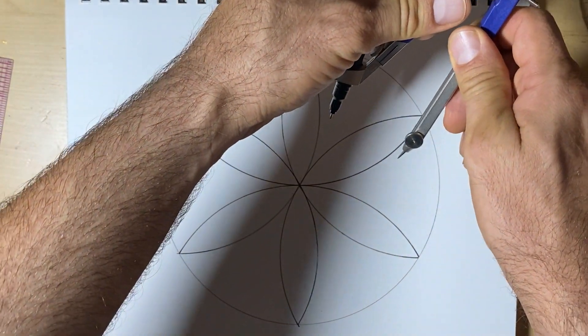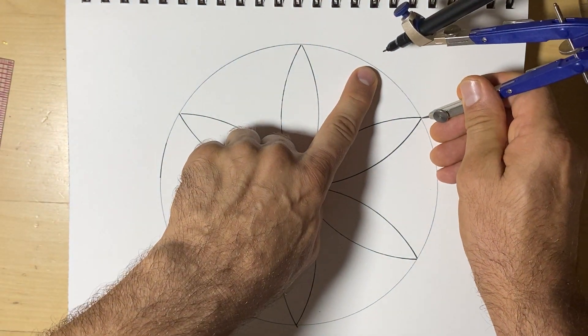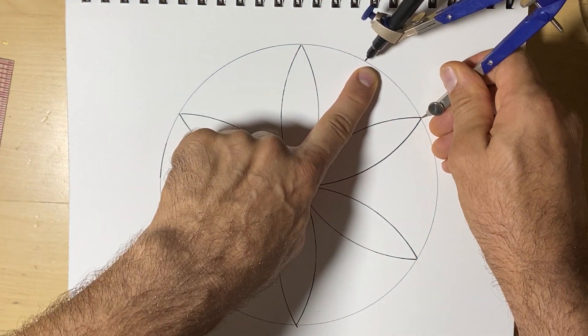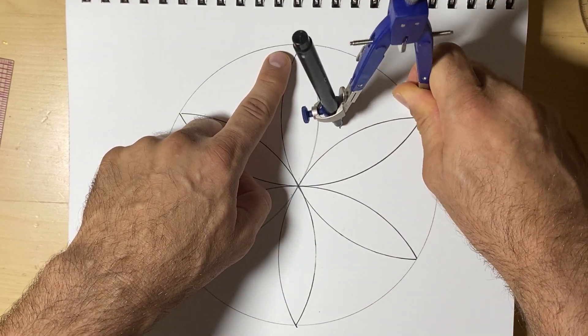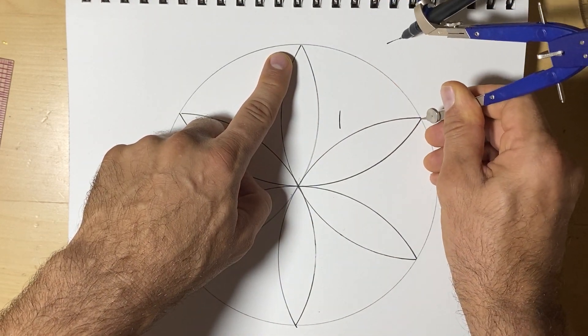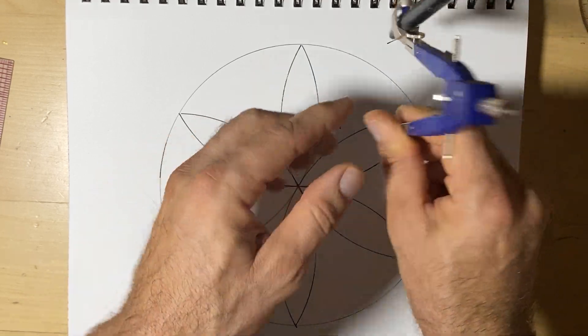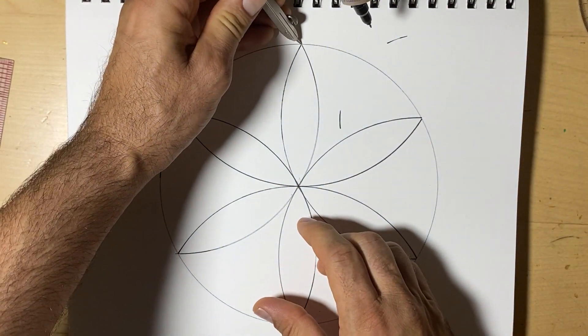So I'm going to adjust my compass to what looks like more than half. So if my finger is half, we want the compass to go past that. And we're going to make an arc, top and bottom. We can draw the whole arc if we'd like, since we're going to erase it.